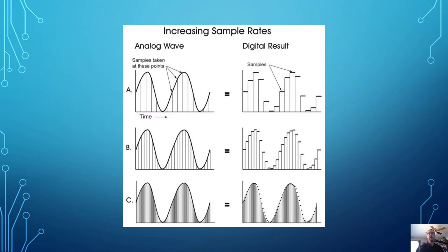Here is a quick look at the difference in sample rates. In part A, you can see where the samples are taken and the resulting digital waveform — very few samples means it will jump from one to the next, very clippy-sounding. With B, we have more samples, so the resulting digital waveform is smoother. And in C, we have even more, so it's even smoother.